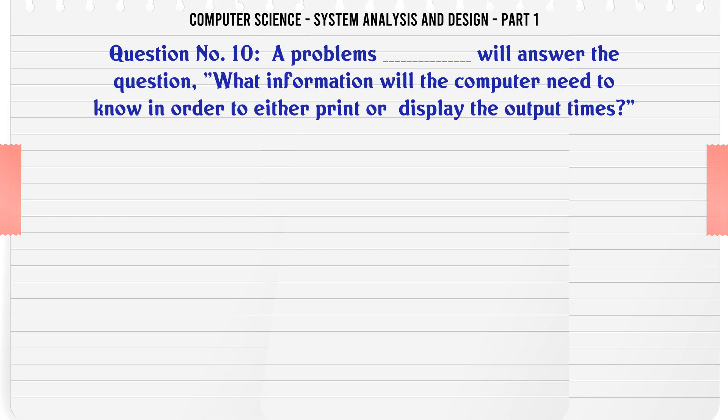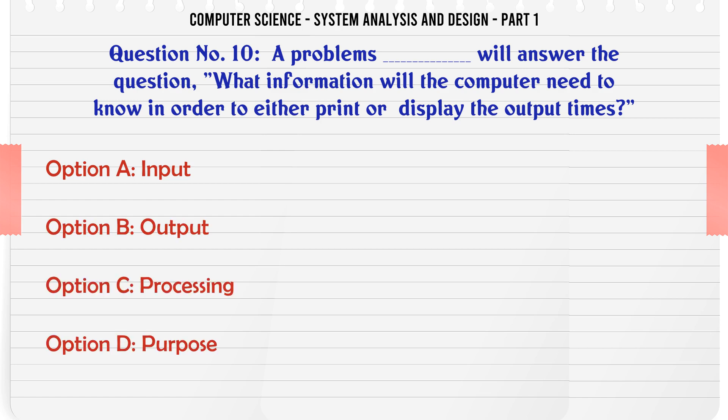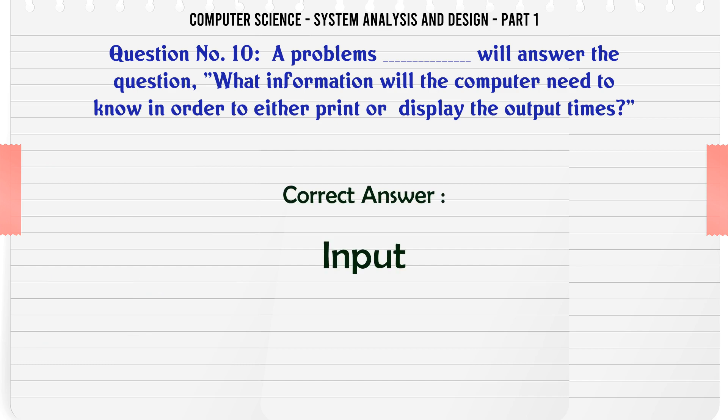Problems will answer the question: What information will the computer need to know in order to either print or display the output? A. Input. B. Output. C. Processing. D. Purpose. The correct answer is: Input.